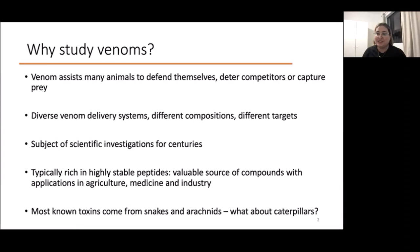Most known toxins that we are aware of come from snakes and arachnids, while insects, and more specifically caterpillars, also have complex and interesting venoms. The specific thing about caterpillars is that they don't prey on anything, so they only use their venom for defense.